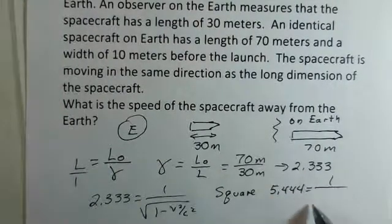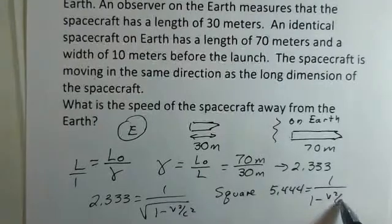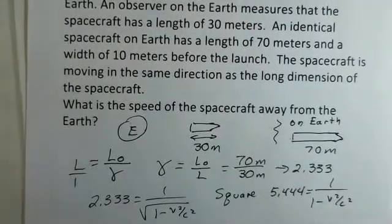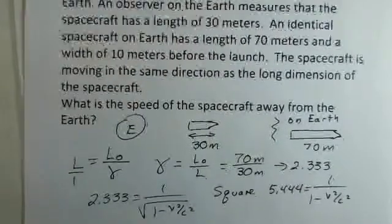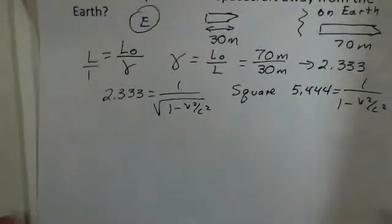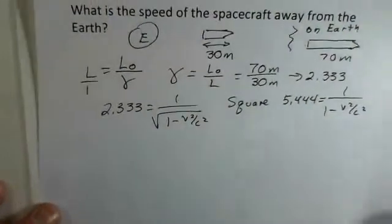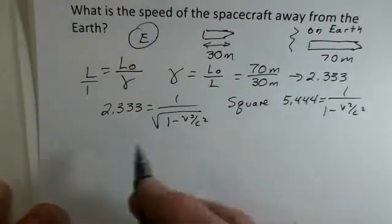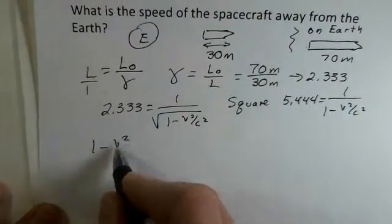We end up with 5.444, and now we have 1 over 1 minus v² over c². There's no longer a square root symbol. We got rid of that. Now I'm going to cross multiply.